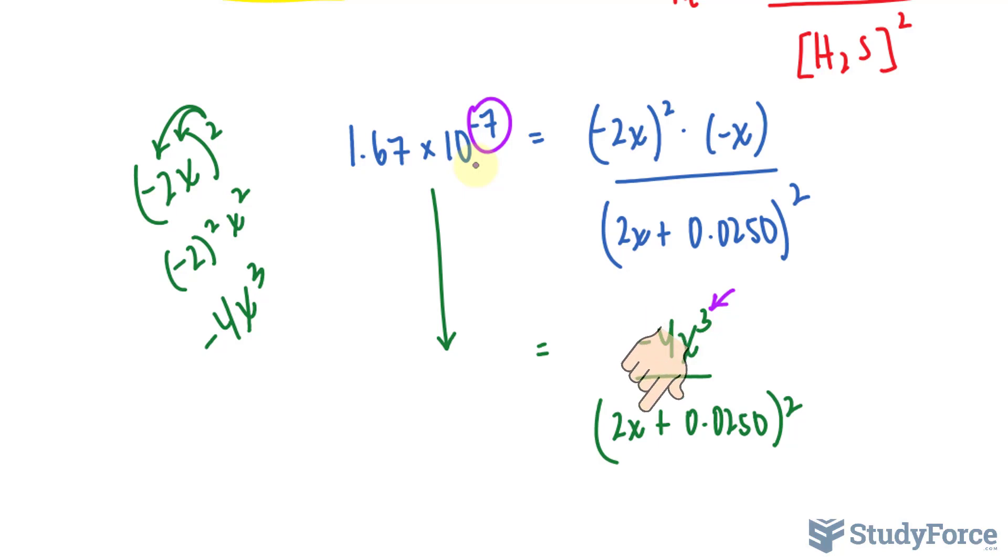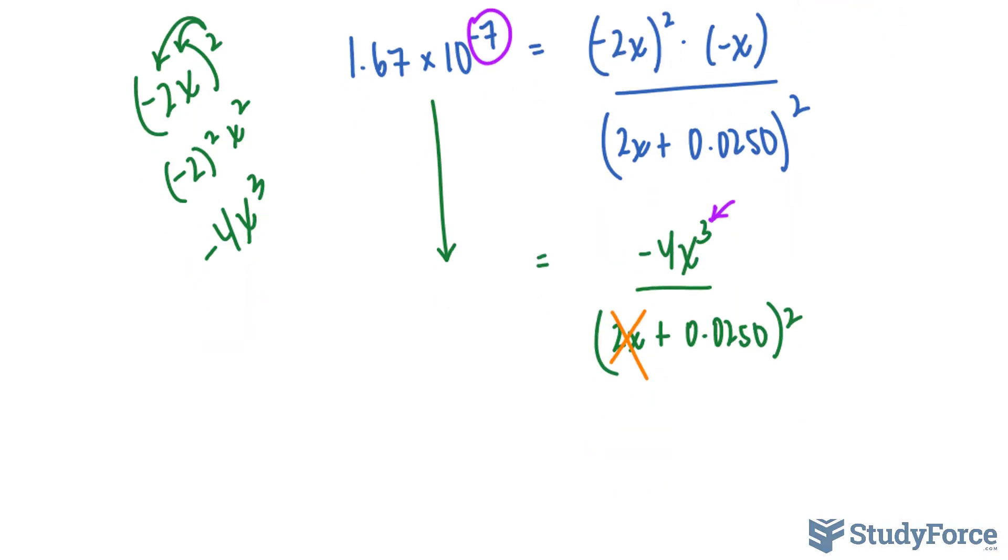And so if you apply a very small number into 2X, multiplying 2 by a very small number makes it negligible, makes it almost 0. So we can ignore 2X or drop any X that's being added or subtracted to another term. So at this point, I'm going to get rid of 2X, and I'm left with 0.0250 raised to the power of 2.